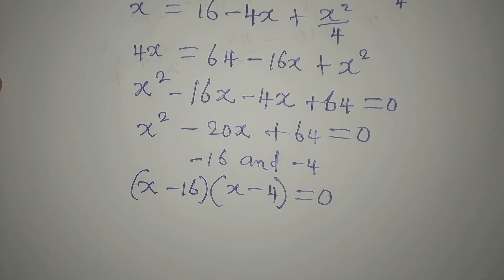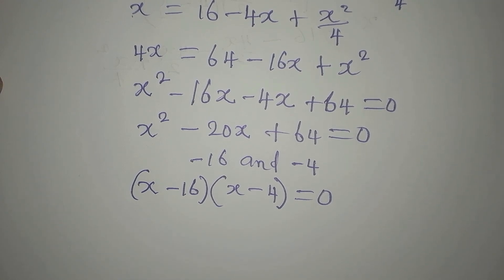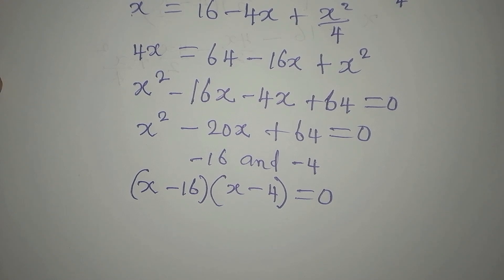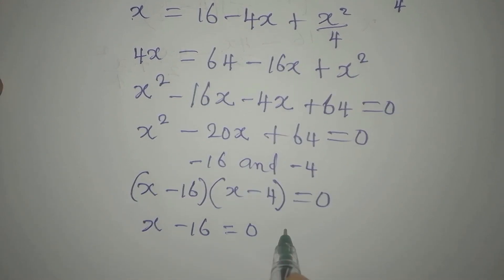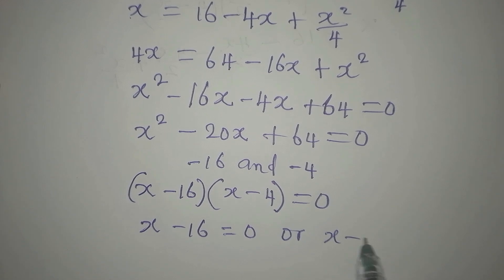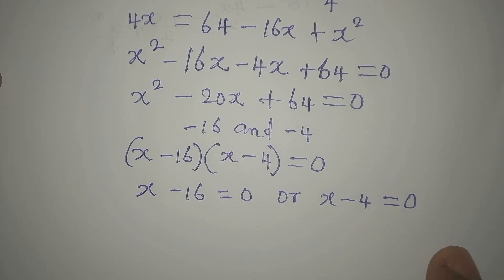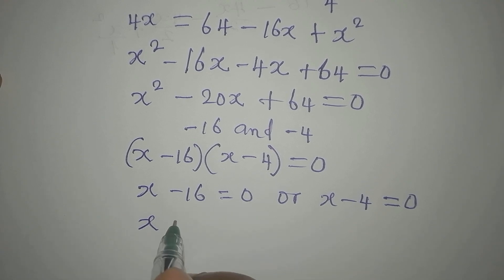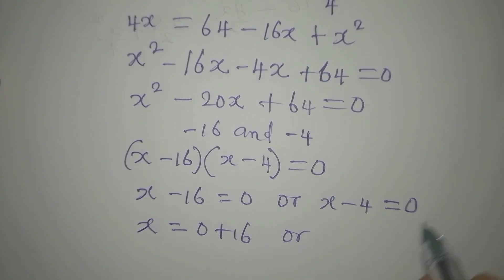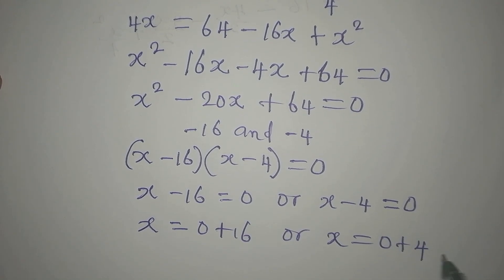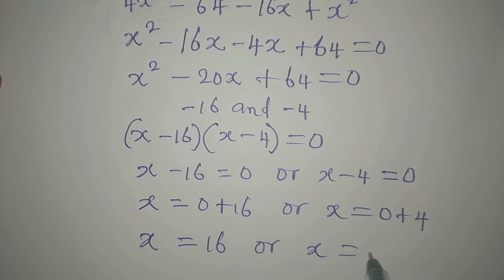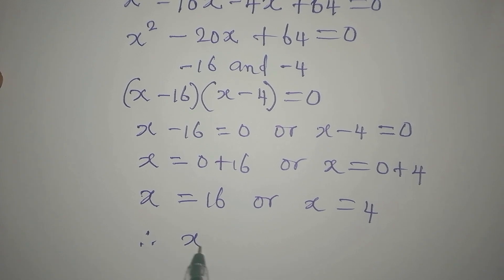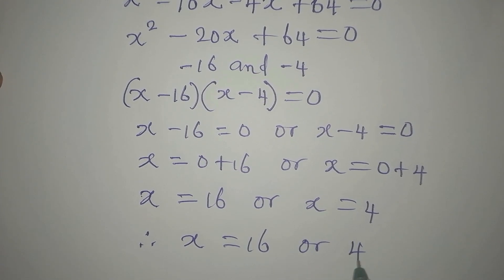Setting each factor equal to zero: x - 16 = 0 gives x = 16, and x - 4 = 0 gives x = 4. By the zero product property, if two factors multiply to zero, at least one must equal zero. So x = 16 or x = 4.